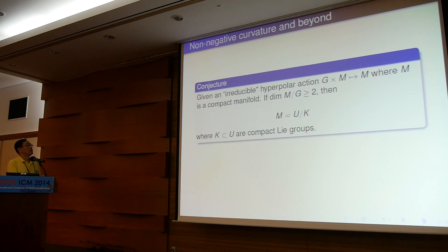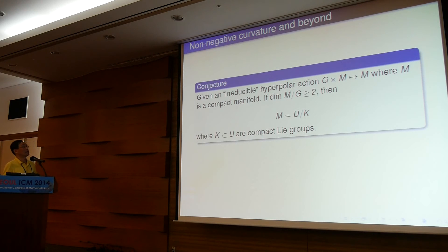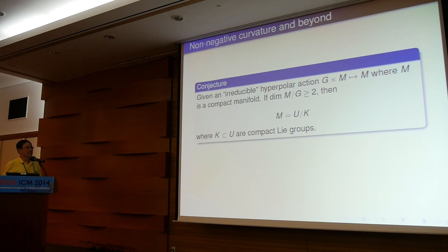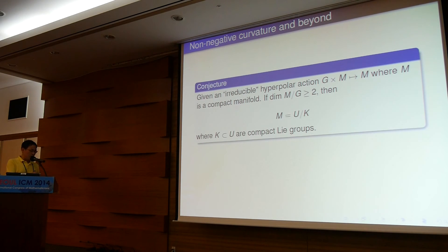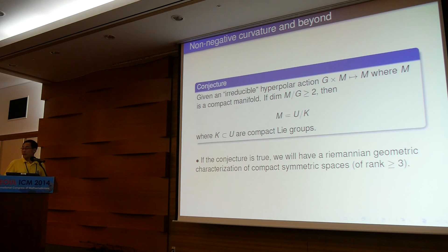Now let's move from positive to non-negative curvature. In non-negative curvature there are many more examples, because every Lie group and every homogeneous space gives you such a metric. As part of the answer, for an irreducible hyperpolar action with cohomogeneity at least 2 on a non-negatively curved manifold, we can show that the manifold has to be a homogeneous space — specifically, M must equal U/K where U is a compact Lie group and K is a compact subgroup. This can be regarded as a geometric characterization of compact symmetric spaces.